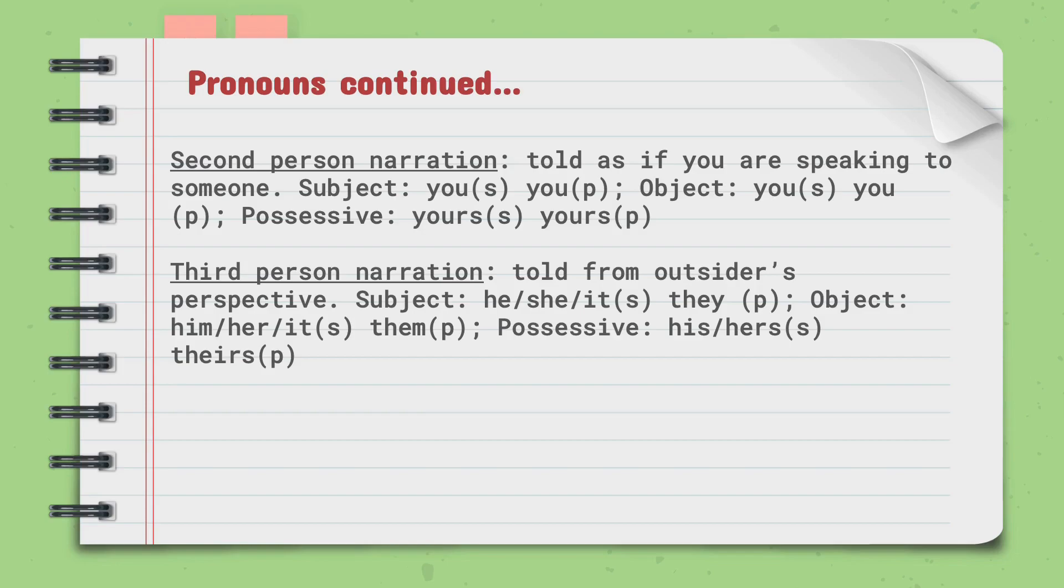Lastly, in third person narration, which is told from the outsider's perspective, the subject can be he, she, or it, for singular, and they, for plural. The object can be him, her, or it, for singular, and them, for plural. Possessive: his or hers, for singular, and theirs, for plural.